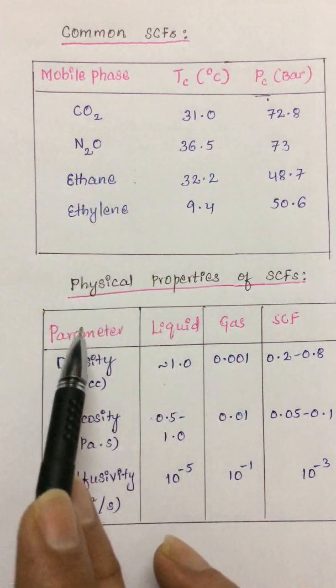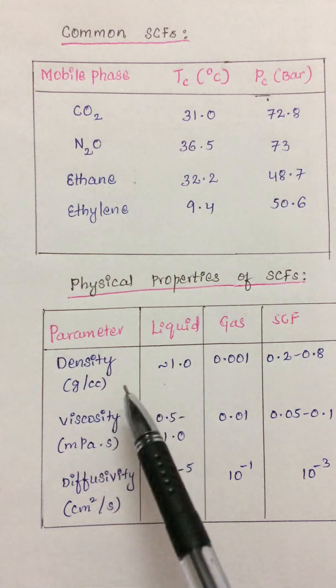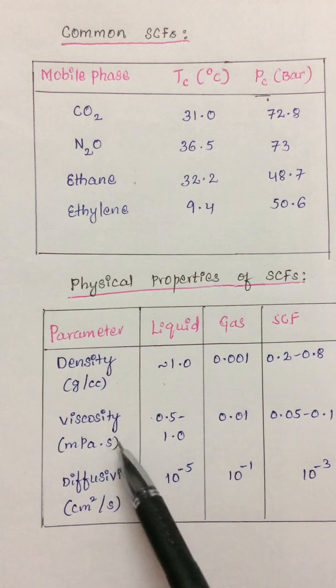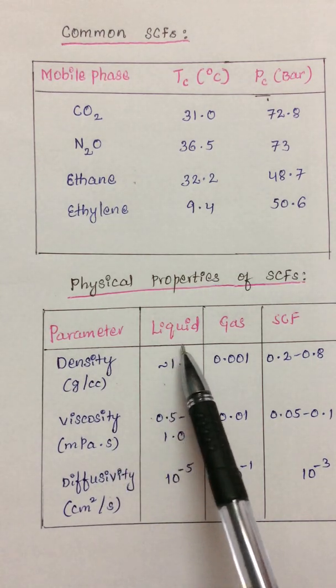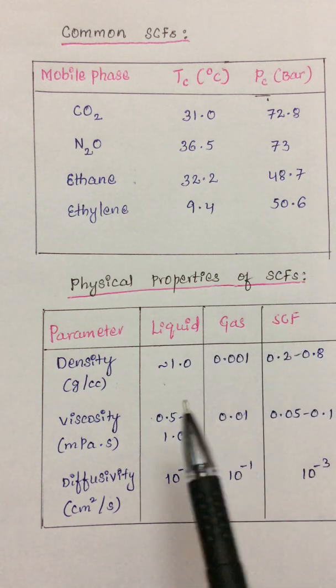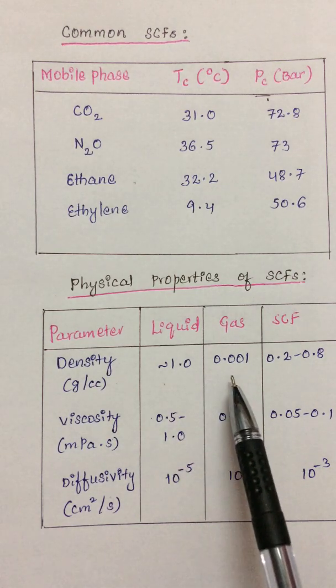Coming to some physical parameters of these supercritical fluids, the most important physical parameters that I am choosing are the density, viscosity, and diffusivity. So there is a comparison between the liquid, gas, and the supercritical fluid. Look at the density: it is around 1.0, whereas for a gas it is about 0.001.